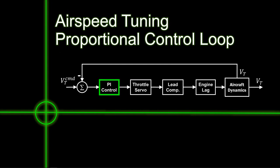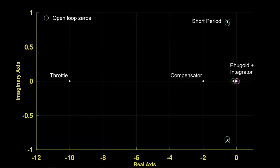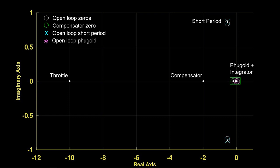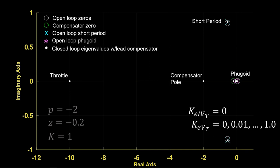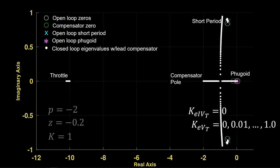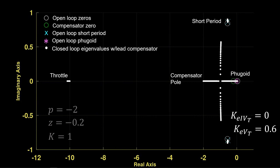Airspeed proportional loop: this is a pole-zero plot for the full four-state longitudinal system showing open-loop poles in white circles, the compensator zero in a green circle near the origin, the open-loop short-period pair in blue x's — note how close they are to a complex zero pair — the open-loop phugoid in pink stars, and the closed-loop system with zero gain but the lead compensator in the loop. As the proportional gain increases, the compensator and airspeed poles form a complex pair with decreasing damping. We select a gain of 0.6.